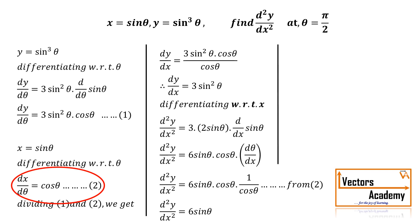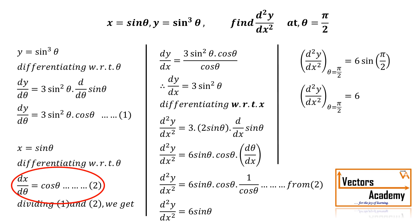Now we know the value of θ as well. So substituting θ equal to π by 2 and simplifying, I will get the value of the second order derivative at θ equal to π by 2 as 6.